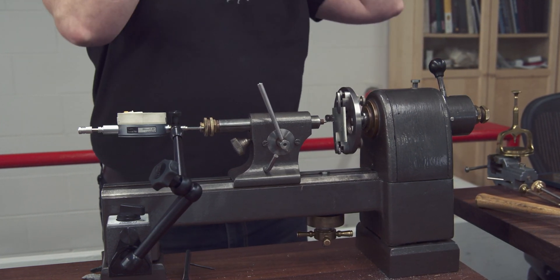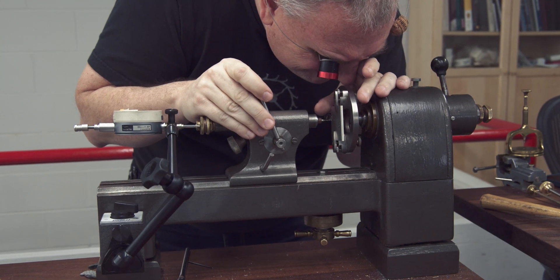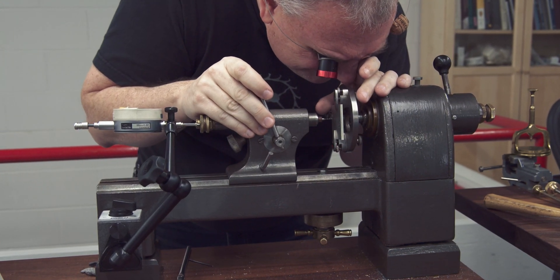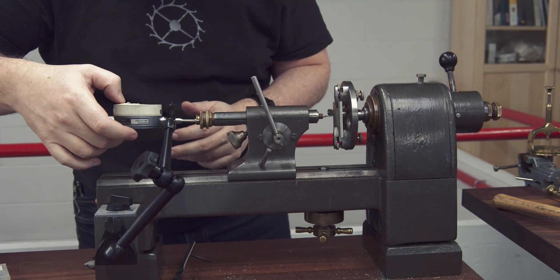Here you can see me setting up the drill bit on the surface of the actual plate itself, the bridge plate, and then I can zero the dial indicator and that allows me to know exactly how deep it is that I'm drilling.